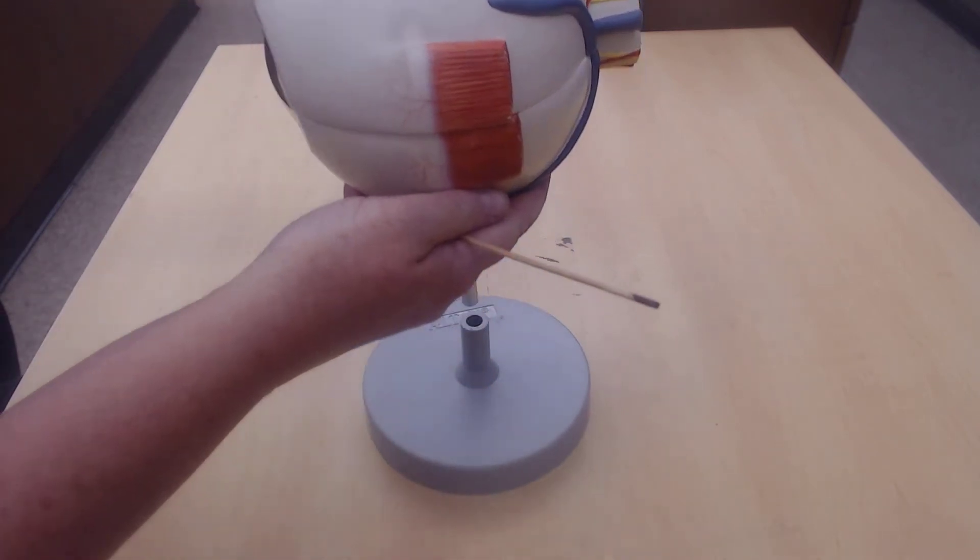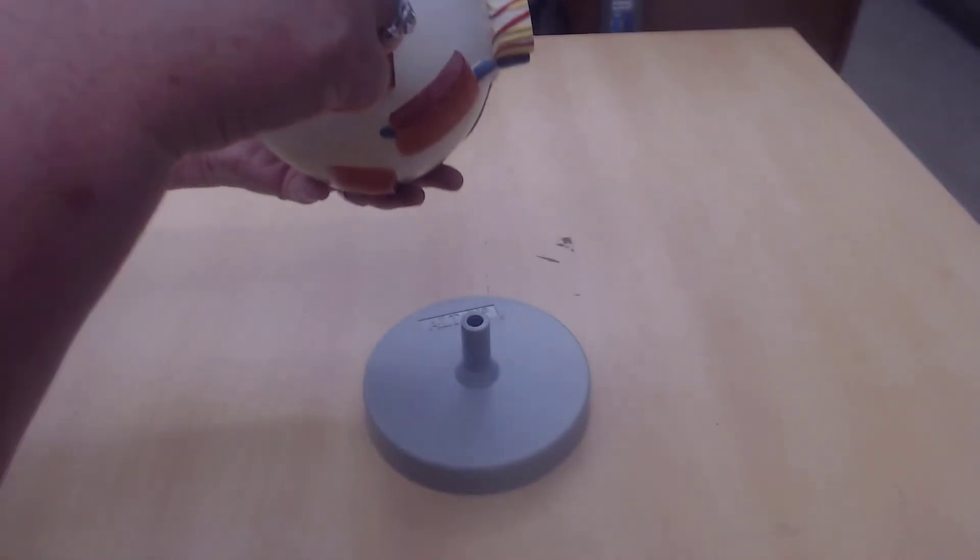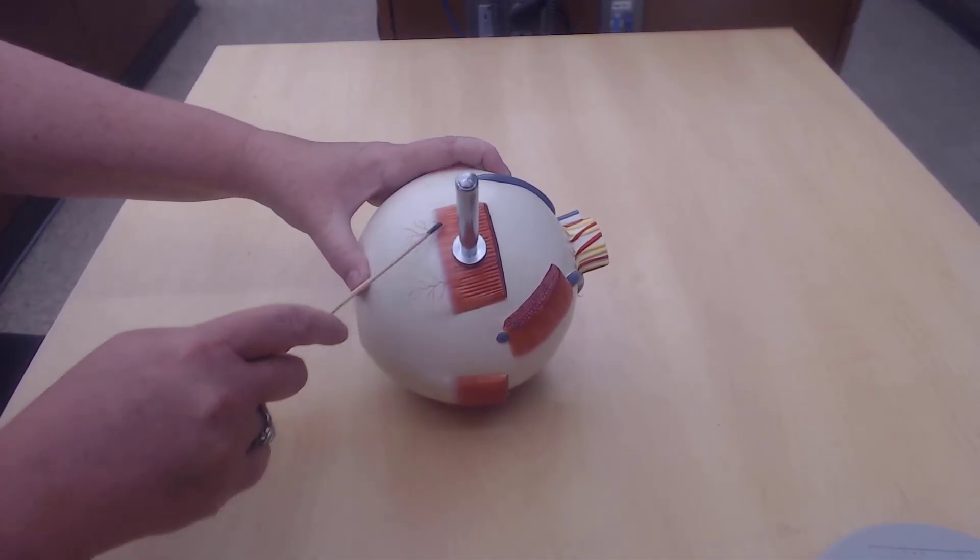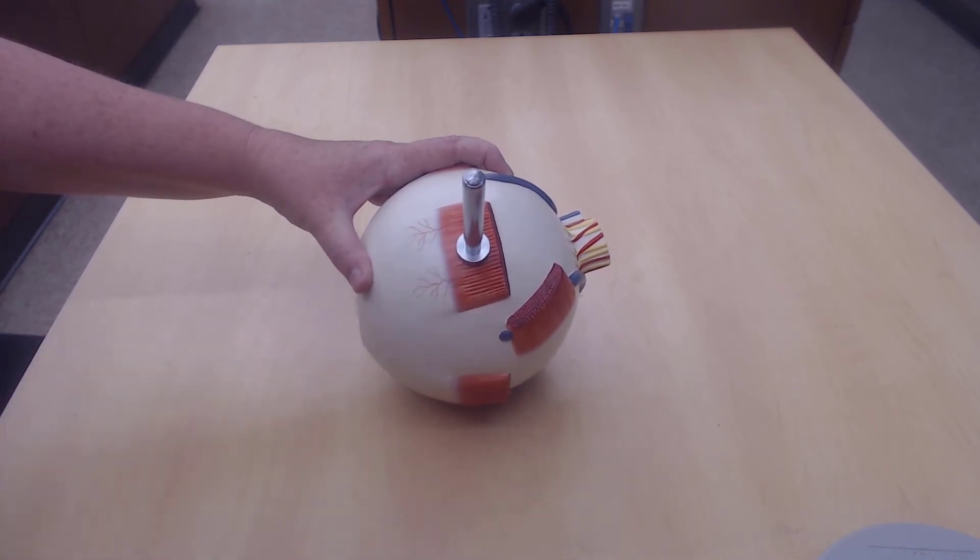And I also have on the bottom here, the inferior rectus muscle. The inferior rectus muscle allows us to look downward.